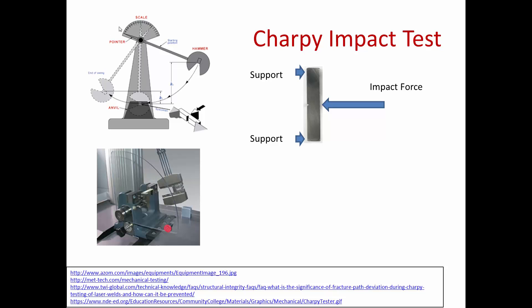In terms of the test machine, the main components are the anvil, which supports the sample; the hammer, which impacts the sample; and a scale and a pointer, which is used to measure how much energy is absorbed.